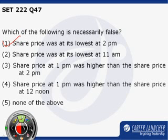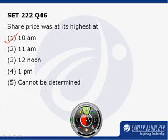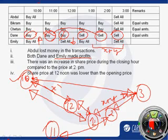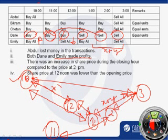The third option says share price at 1 p.m. was higher than the share price at 2 p.m. Looking at our analysis, we cannot really compare the share price at 1 p.m. and the share price at 2 p.m. — we do not have that comparison directly. So we cannot say anything about this option.